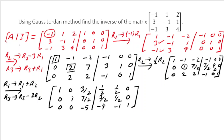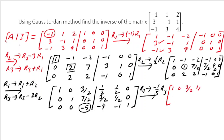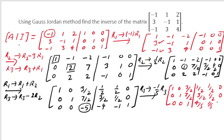Now everything below and above (2,2) is 0. I need to make the (3,3) element equal to 1. It is minus 5, so I multiply R3 by minus 1/5. The new matrix: R1 stays as 1, 0, 3/2, 1/2, 1/2, 0; R2 stays as 0, 1, 7/2, 3/2, 1/2, 0; R3 becomes 0, 0, 1, 4/5, 1/5, minus 1/5.